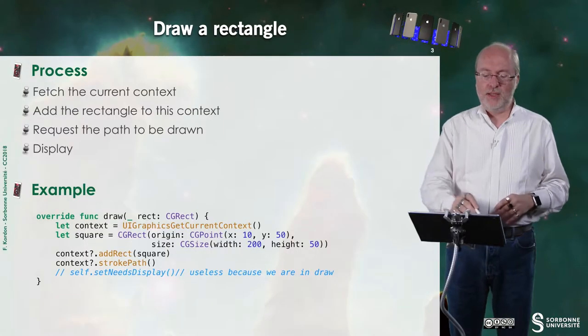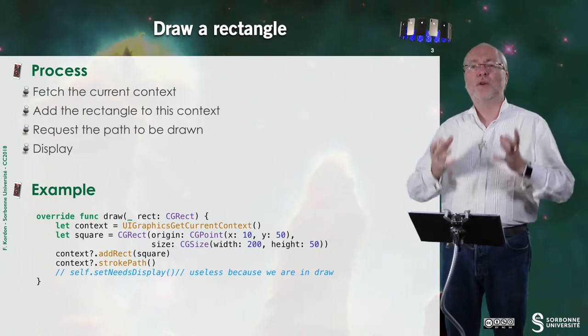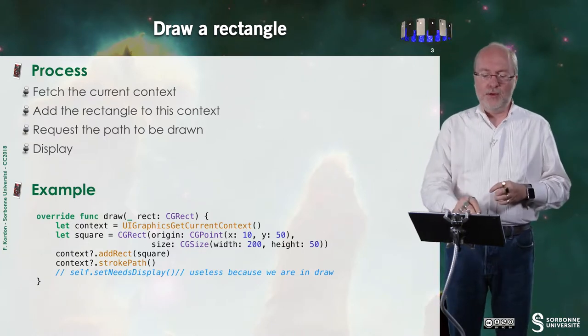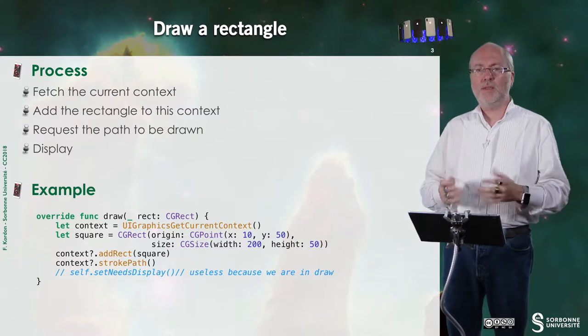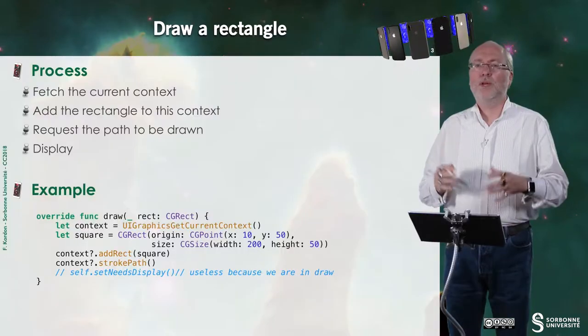First, how do we draw a rectangle? The idea is you fetch a context, the context of Core Graphics, then you add the rectangle to this context, and you request the path to be drawn, and you display.